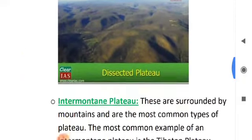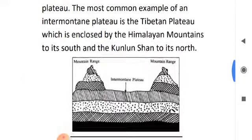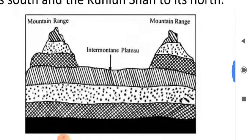Inter-mountain plateau. This type of plateau is surrounded by mountains. The most common example of an inter-mountain plateau is the Tibetan plateau, which is enclosed by the Himalayan mountains. The middle portion is the inter-mountain plateau, surrounded by a mountain range.